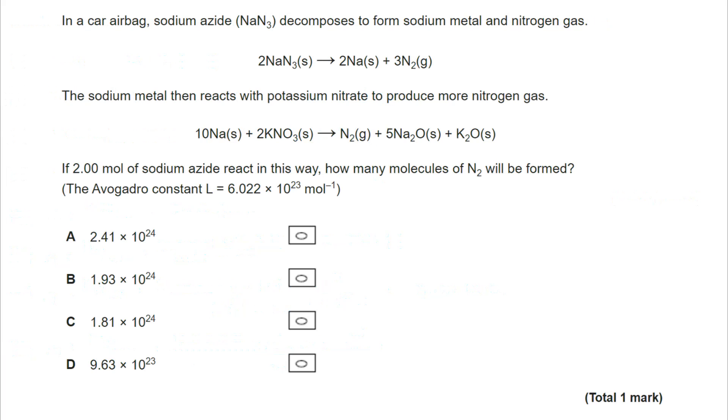Next question. Okay, so we have got here sodium azide decomposing to form sodium metal gas. The sodium metal then reacts with potassium nitrate to produce more nitrogen gas. And we've got the second equation to show it. If we start with two moles of sodium azide, how many molecules of N2 will be formed? This is another big question. There's a lot to do and a lot to consider. So let's take a look.